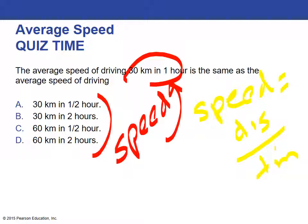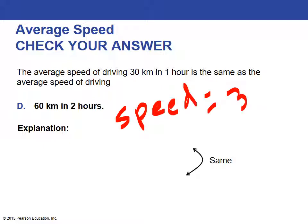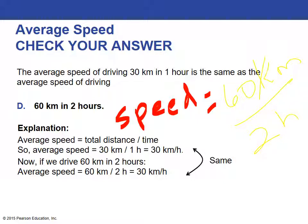60 kilometers in two hours. The speed here, if I were to calculate it, 60 kilometers divided by 2 hours equals 30 kilometers per hour, just like the last one. Bring this up in class if it doesn't make sense to you.